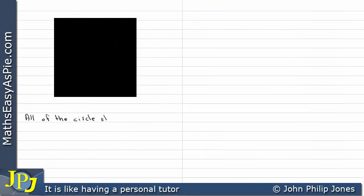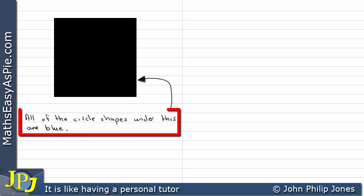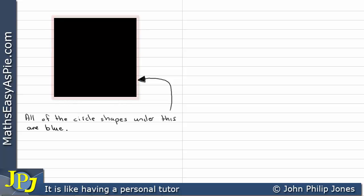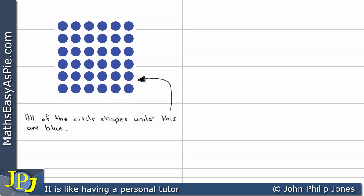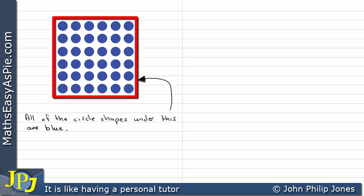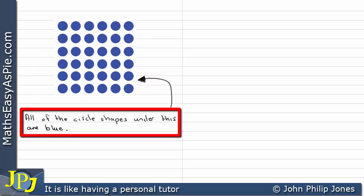All of the circle shapes under this black area are blue. To see if this statement is actually true, I can remove this black shape and see what's underneath it. The black shape has been removed and we can see that all of the circles are blue. Consequently, this statement has proved to be correct.